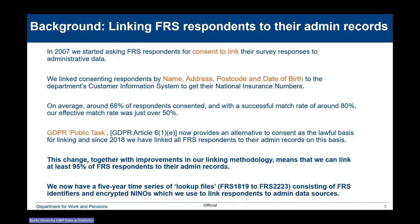The customer information system is the repository of every national insurance number that has been issued, and the latest addresses for people with national insurance numbers. On average, with explicit consent, 66% of respondents consented, and then with the method we had for matching, we matched about 80% of consenting respondents, giving us an effective match rate of just over 50%. So that limited what we could do with linking.